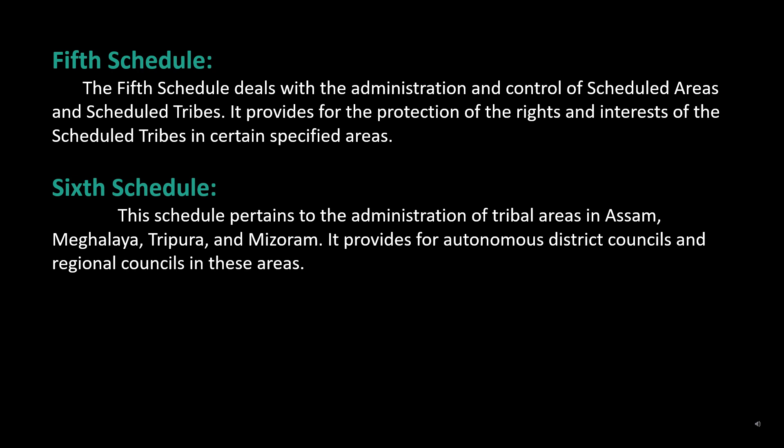5th Schedule: The 5th Schedule deals with the administration and control of scheduled areas and scheduled tribes. It provides for the protection of the rights and interests of the scheduled tribes in certain specified areas. 6th Schedule: This schedule pertains to the administration of tribal areas in Assam, Meghalaya, Tripura, and Mizoram. It provides for autonomous district councils and regional councils in these areas.